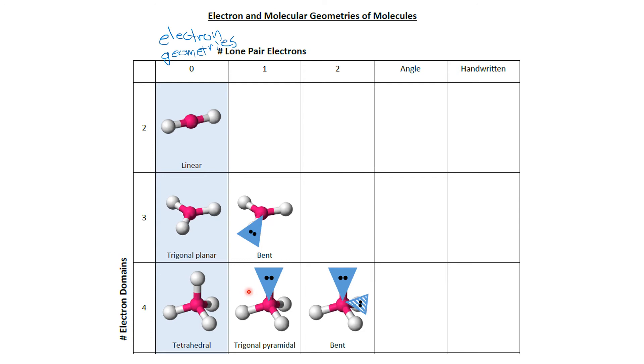If instead of having one lone pair we have two lone pair domains, then we end up with a shape that's also called bent. We have three atoms that are not quite in a line, so that's where that term bent comes from.